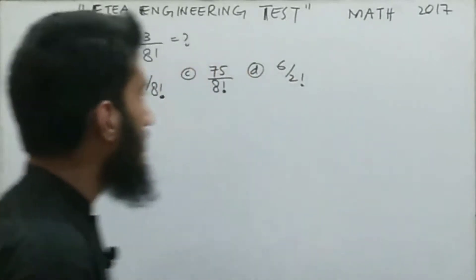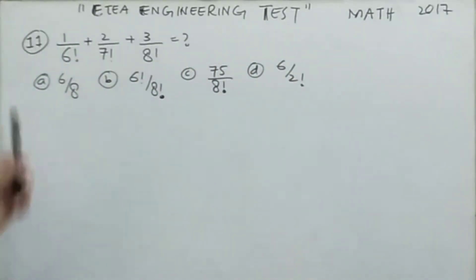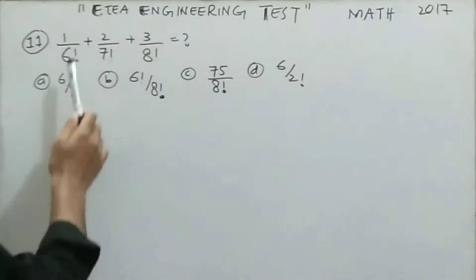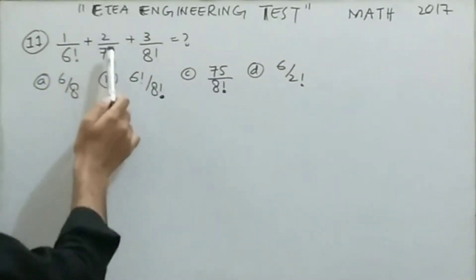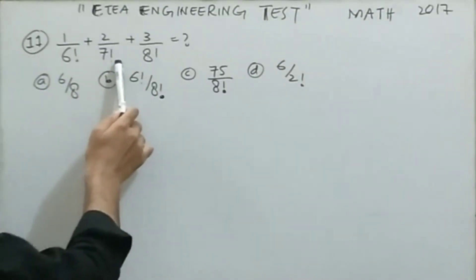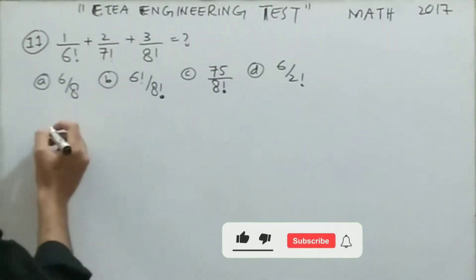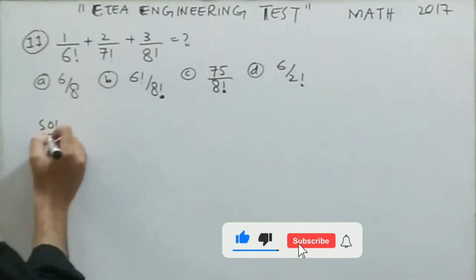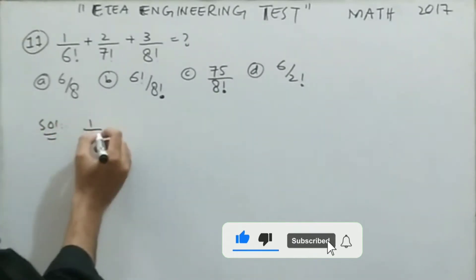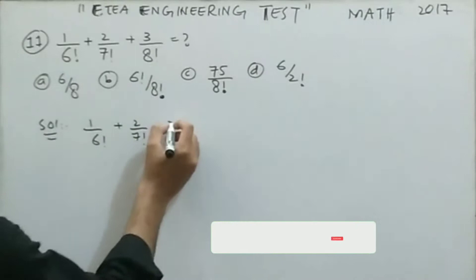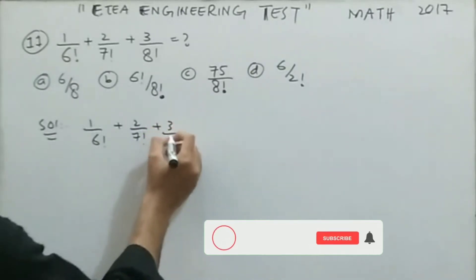Let's move toward MCQ number 11 of the ETA Engineering Test of 2017 mathematics portion. It tells that 1 over 6 factorial plus 2 divided by 7 factorial plus 3 divided by 8 factorial is equal to which value. Four options are given for this MCQ.